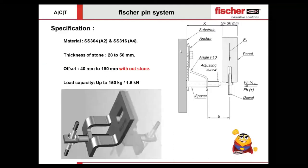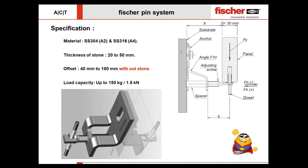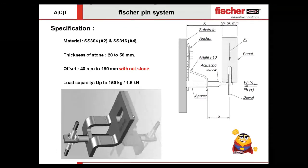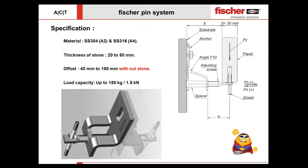Here are the specifications: all accessories come in both SS304 and SS316, which are A2 and A4 materials. The maximum stone thickness you can fix with this clamp is from 20 mm to 50 mm. The maximum offset — not including stone thickness — ranges from a minimum of 40 mm to 180 mm. The load capacity per clamp is up to 150 kg or 1.5 kilonewtons as a factored load. You can see a detailed diagrammatic representation of how this fixation works for concrete and a 3D image of the clamp.